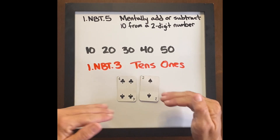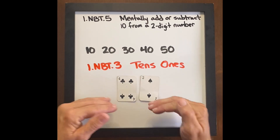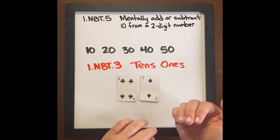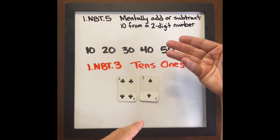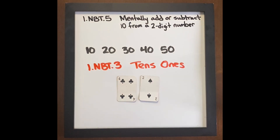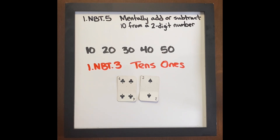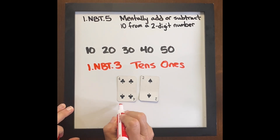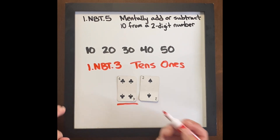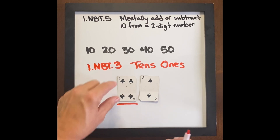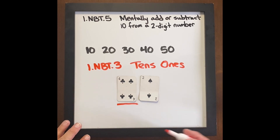So if we can go back and really work on understanding what tens and ones are, it will help us with mentally adding and subtracting 10 from a two-digit number, because we're helping students make the connection. When you're adding 10, you're just focused on the tens — so if we have 4 tens, the next number is 5 tens.